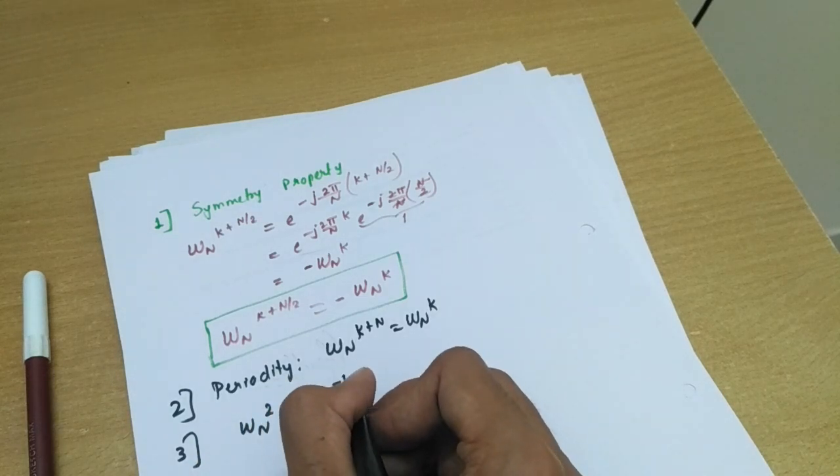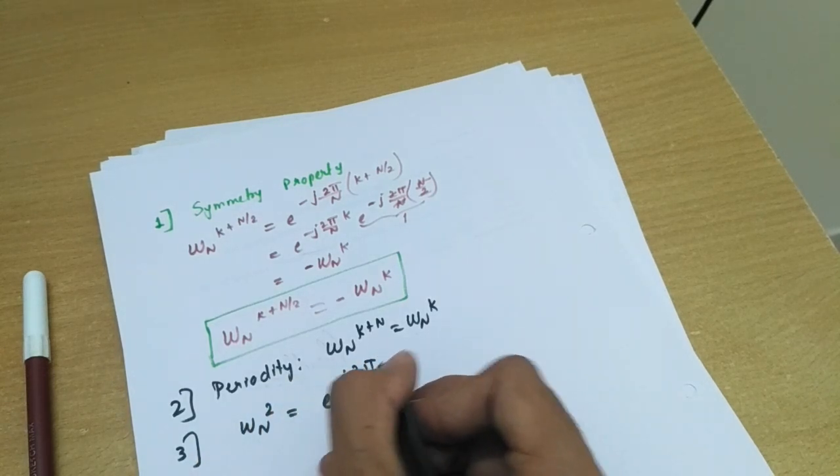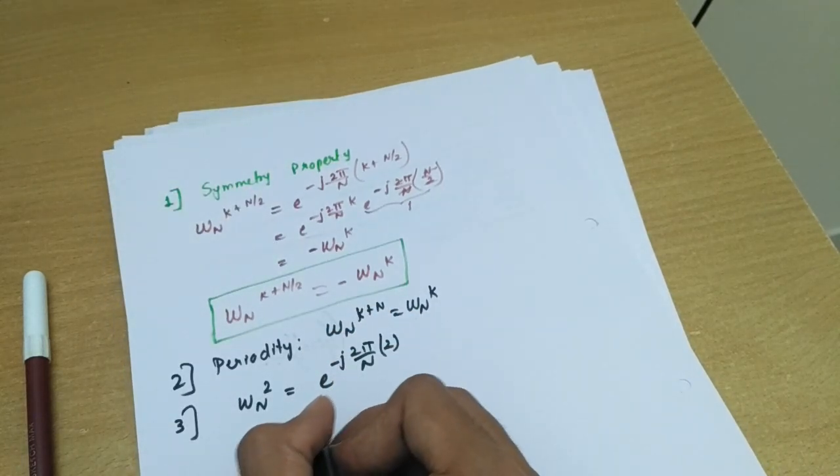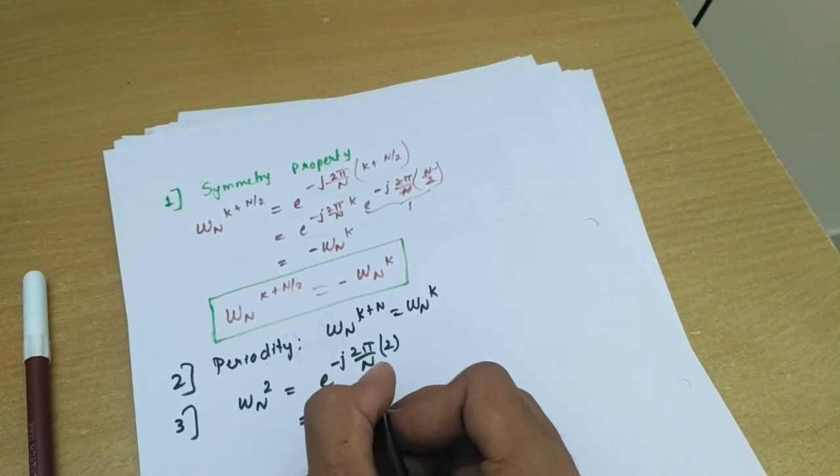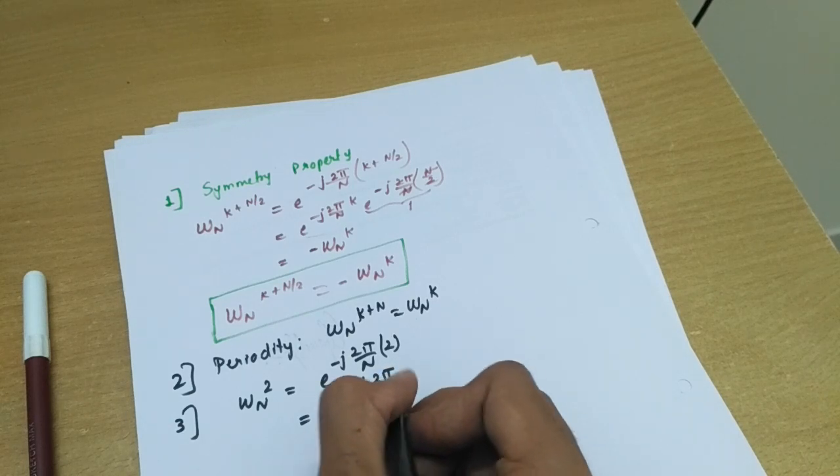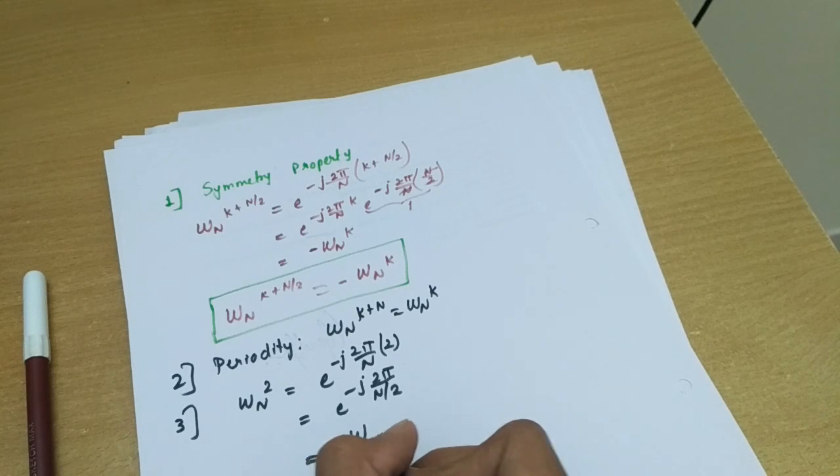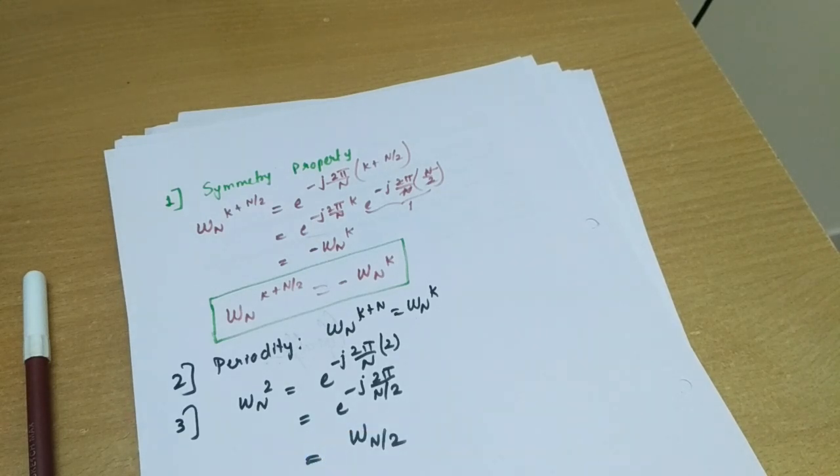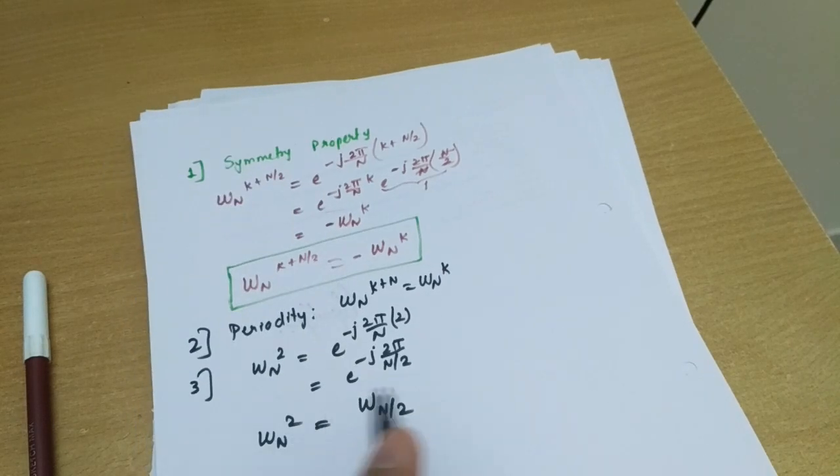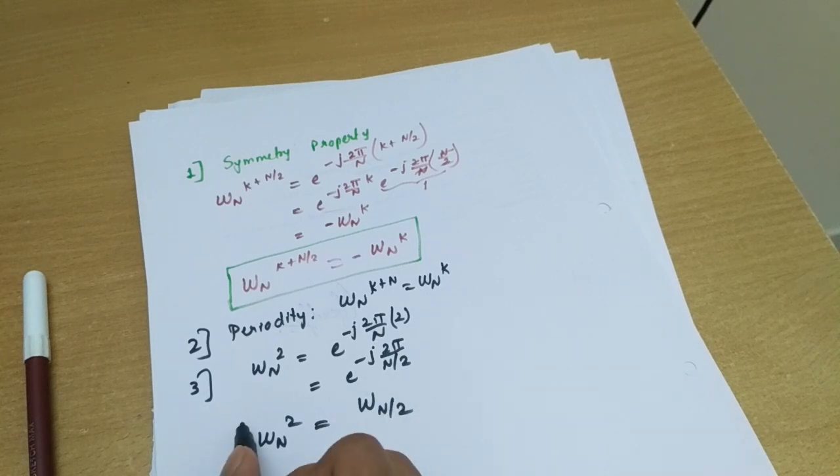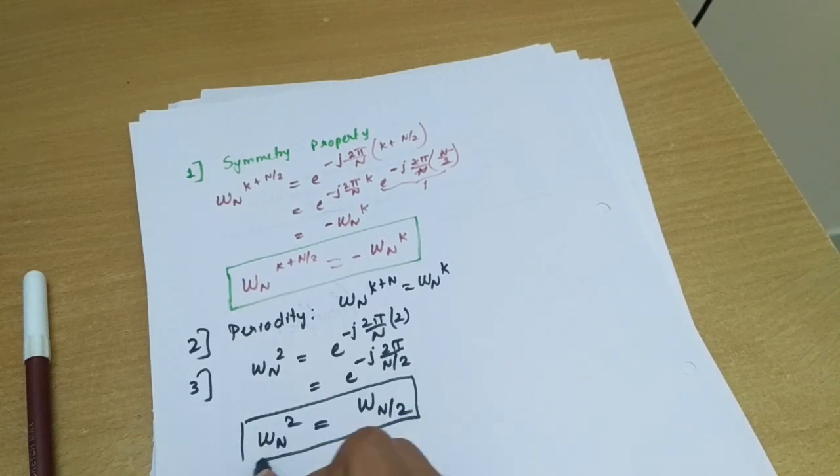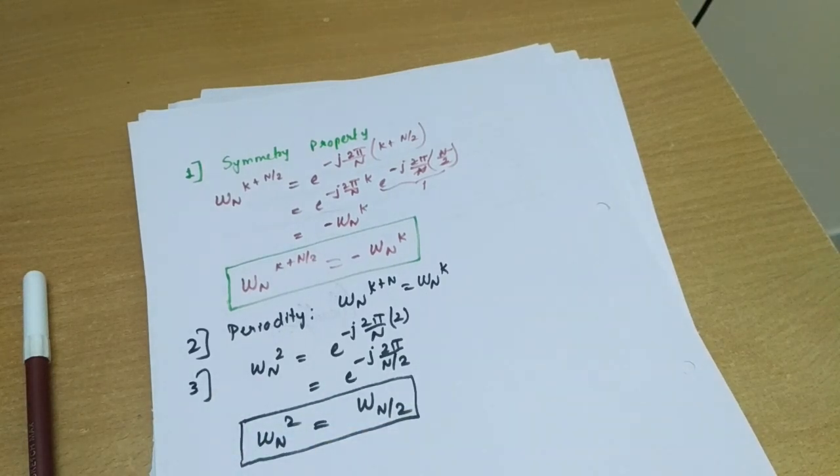And one more which is important: W_N squared can be written as W_N by 2. Simple properties - the W_N squared is nothing but the 2 will be reflected in the division factor with N, so this is one more property. So these three properties we will frequently encounter, so just we have revisited it.